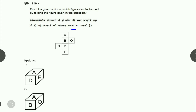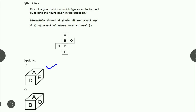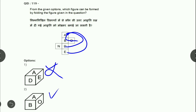Next: dice का open figure दिया है, बताना है कि कौन सा dice correct है। First option में A, D, E हैं — A और D consecutive आ सकते हैं लेकिन A और E की possibility difficult है, तो यह option गलत है। Second option में A, B, O हैं — ये दोनों एक दूसरे के nearest हैं और इस formation में एकदम correct हैं। यही correct answer है।